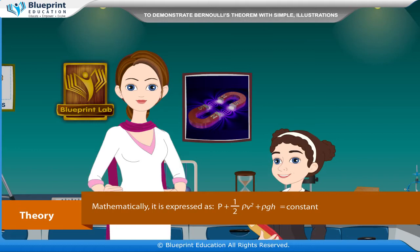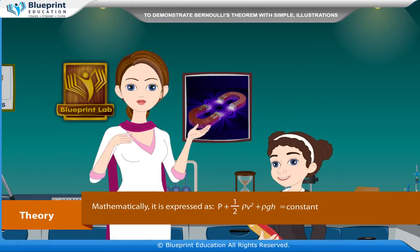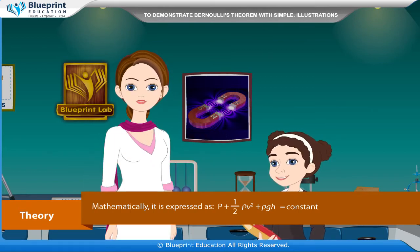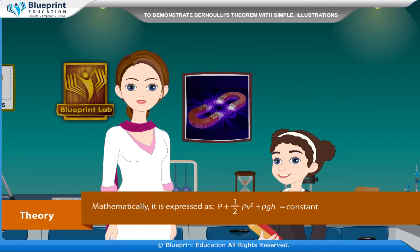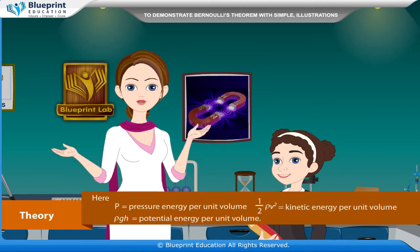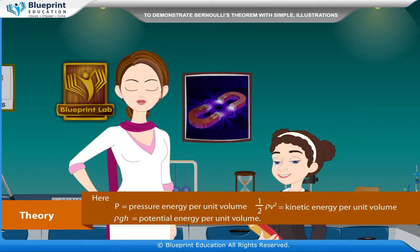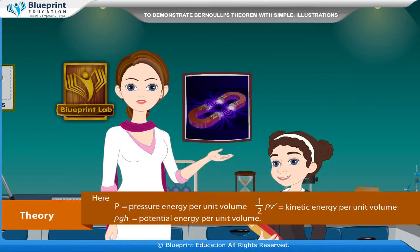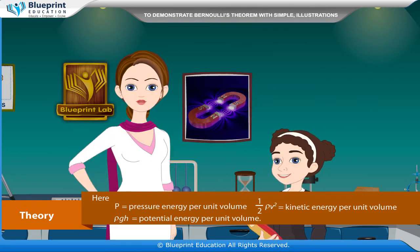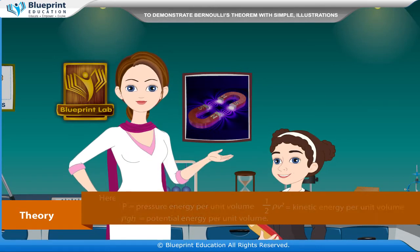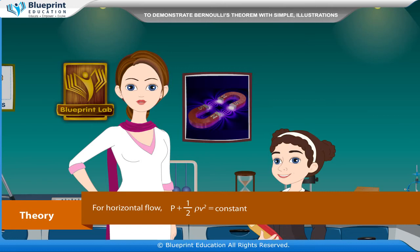Mathematically, it is expressed as p plus half rho v square plus rho g h is equal to constant. Here, p is equal to pressure energy per unit volume, half rho v square is equal to kinetic energy per unit volume, and rho g h is equal to potential energy per unit volume. For horizontal flow, p plus half rho v square is equal to constant.